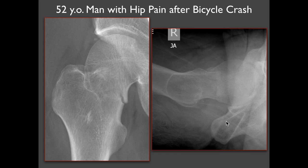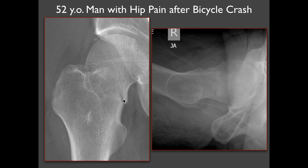Here's a 52-year-old man who has pain after crashing his bicycle. You can see the femoral head and femoral neck. There's a lucency along the medial femoral neck — that is a fracture. More laterally there's sclerosis, which is also part of the fracture where the bone is impacted and overlapping, creating increased density. On the true lateral view you can see the femoral head, anterior and posterior parts of the femoral neck, and the fracture cutting right across.